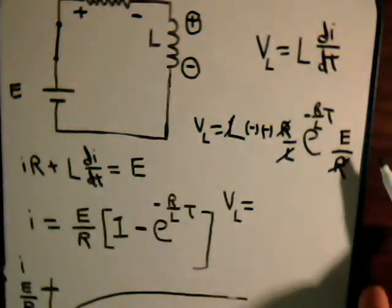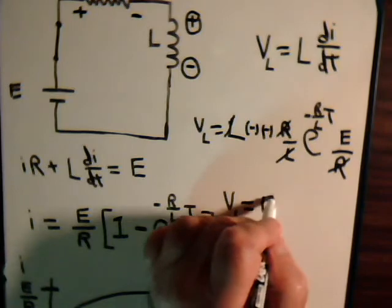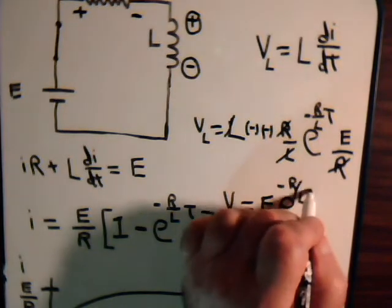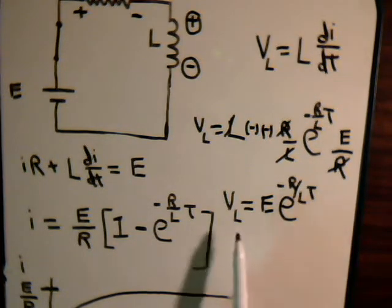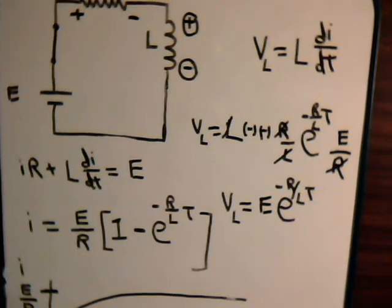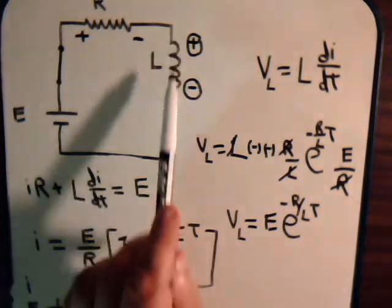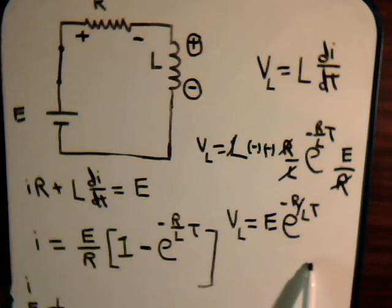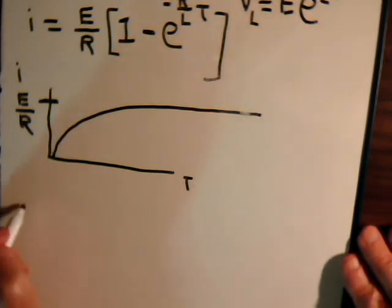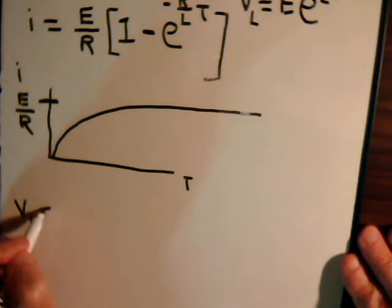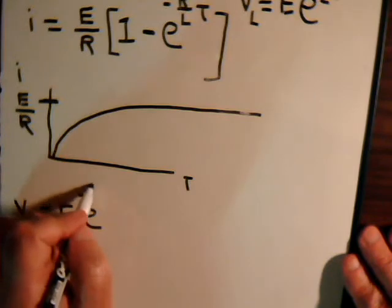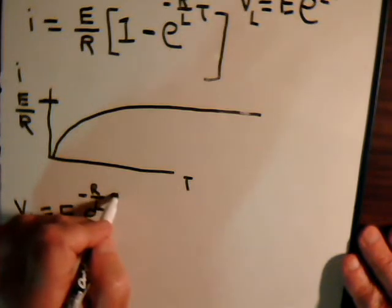So now we get that the voltage across the inductor equals L. But here then, this cancels out. Here, so we just get it's equal to E times e to the minus R over L times t. So let's take this. That is the expression then for the voltage, the induced voltage across the coil at any time.